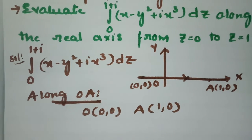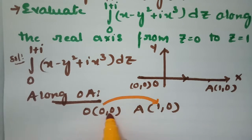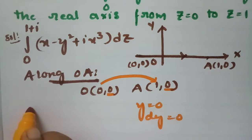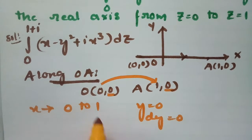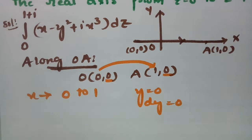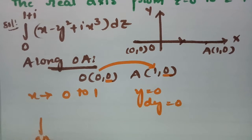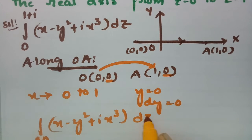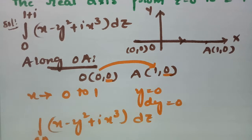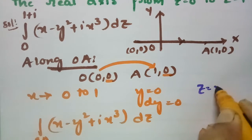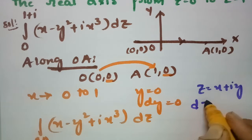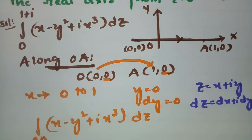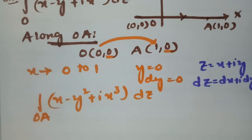Along OA, x varies from 0 to 1, y is constant at y = 0, and therefore dy = 0. We know that z = x + iy, so dz = dx + i·dy. All this information is clear and now we substitute each and every value.